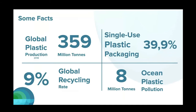This shows that recycling alone cannot solve this problem — we need to look for more different solutions. Also, of those 359 million tons, about 40% is used for single-use plastic packaging, which accounts for the biggest part of plastic pollution in oceans and the environment — products designed for only one use and then thrown away. About eight million tons of all this plastic ends up in the ocean on a yearly basis — that's about one garbage truck every minute.